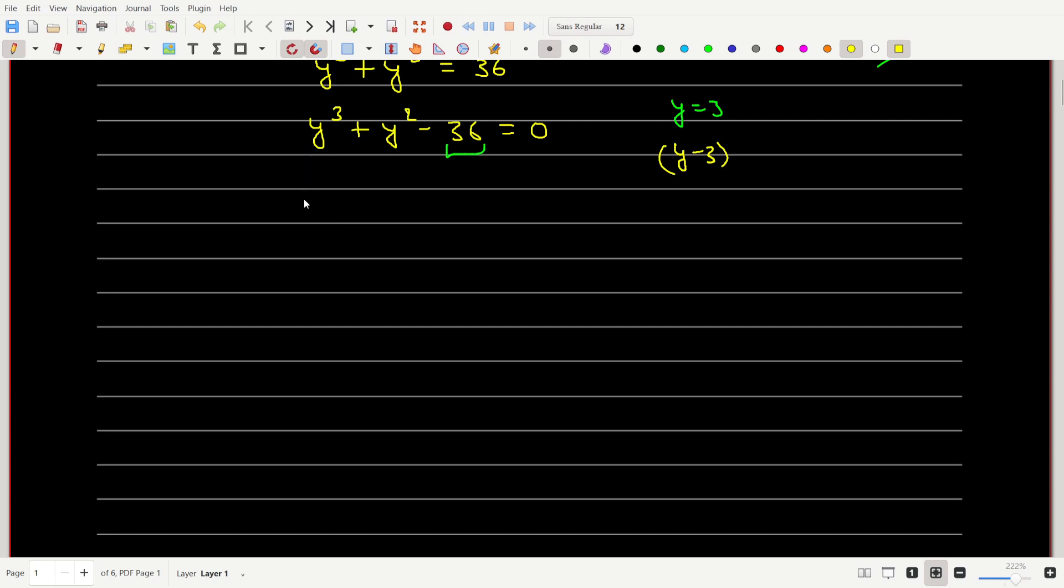We will note down the coefficients of y. The coefficient of y cube is 1, coefficient of y square is 1, coefficient of y is 0, and the coefficient of the constant term is minus 36. And we know y equals 3.